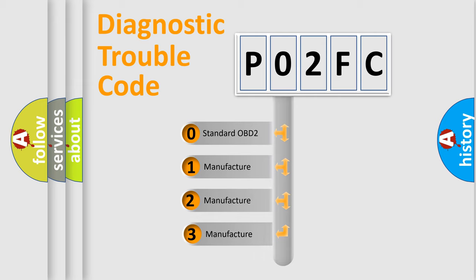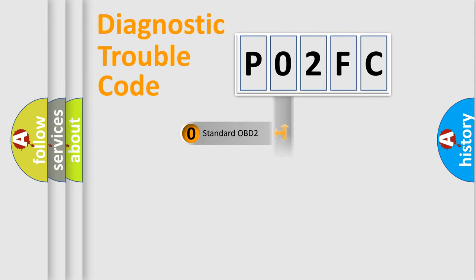If the second character is expressed as zero, it is a standardized error. In the case of numbers 1, 2, or 3, it is a manufacturer-specific expression of the car-specific error.